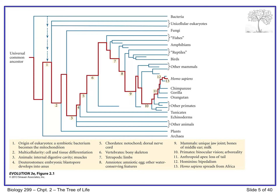Number eight: the amniotes — the development of the amniotic egg, an egg with a waterproofing layer that allows eggs to be laid in dry environments. The amniotes are the reptiles, birds, and mammals. Even though mammals don't mostly lay eggs, we still have the amniotic membrane in the placenta. The amnion is a feature that ties together this group of organisms to the exclusion of everything that evolved before that point.